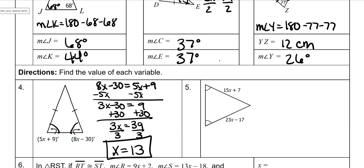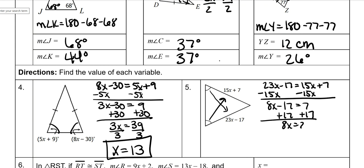And then since these base angles are congruent, these sides are also congruent, so we set them equal to each other and solve. Subtract 15X from both sides. 8X minus 17 is equal to 7. Add 17 to both sides. 8X is equal to 24. Divide by 8, and X is 3.